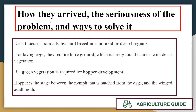Now we need to discuss how the locusts arrived, the seriousness of the problem, and ways to solve it. Normally, desert locusts breed in semi-arid or desert regions. The egg-laying ground for locusts is bare ground without any vegetation.